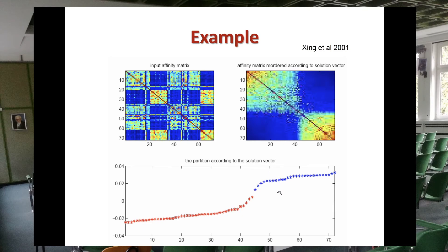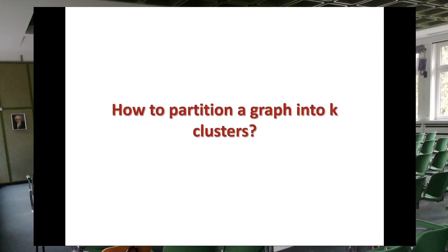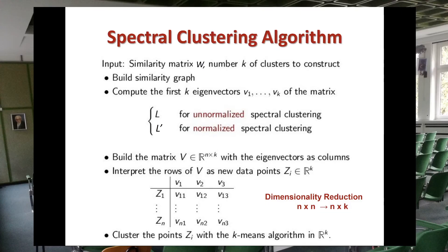When the two groups are perfectly disconnected, you see perfect squares of values. So how do we partition a graph into k clusters? We have seen the case with two clusters — how can we solve this when we have more than two clusters? First you compute the similarity matrix W, and we build the similarity graph, then compute the first k eigenvectors, which we call v1 up to vk.